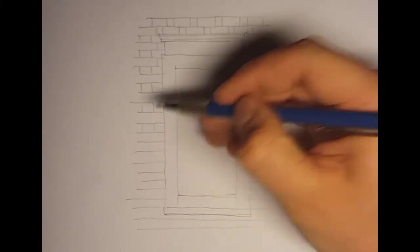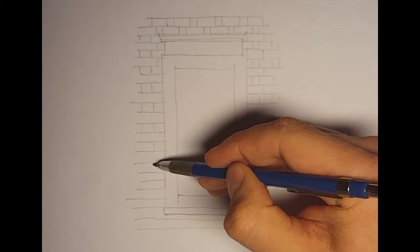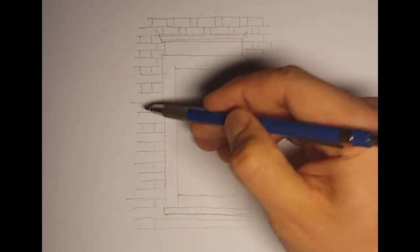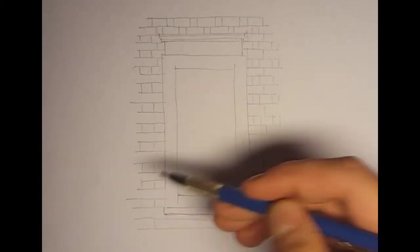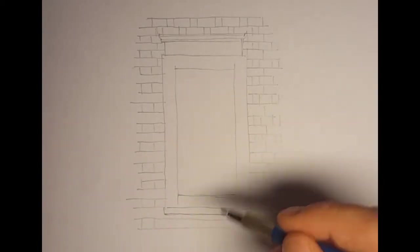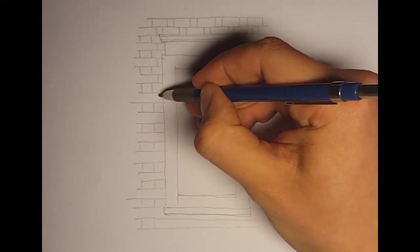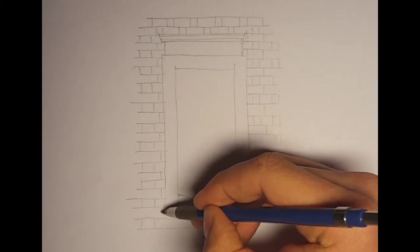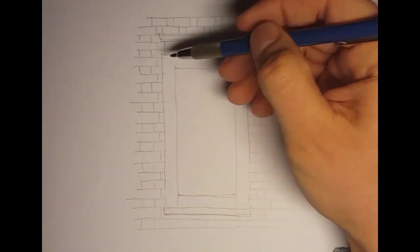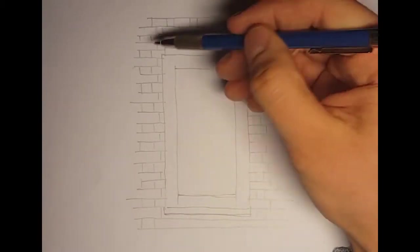It's probably easier to set a guideline like this so you have a straight line down, kind of one brick, roughly one brick thickness.